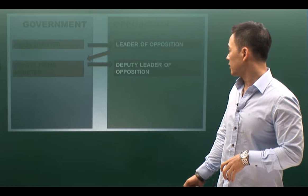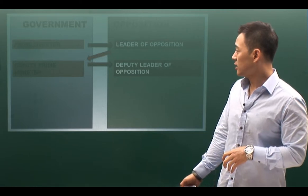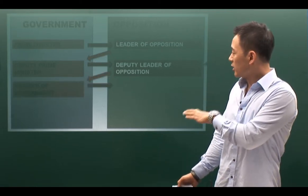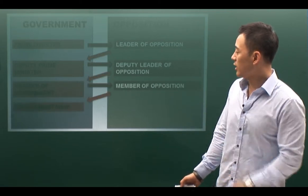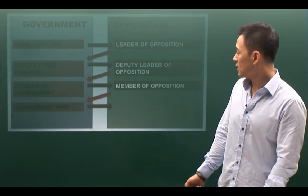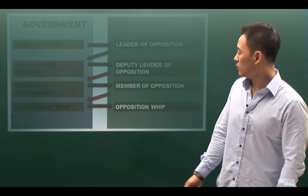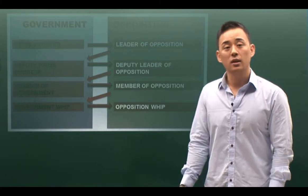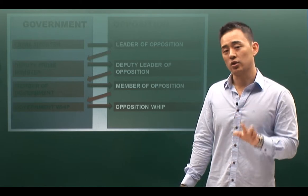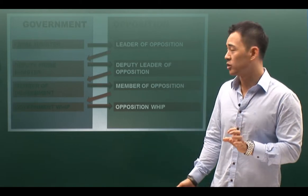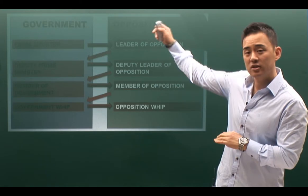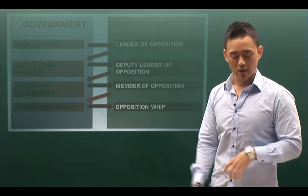Then the Deputy Leader of Opposition. As you can see, the pattern crisscrosses back and forth. The third set is the members, and finally we come in with the government and opposition whips. You want to put your strongest speakers as the Prime Minister and the whip speakers.